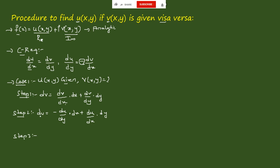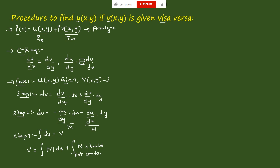Step 3: integrate dv to get the v value. So v = ∫M dx + ∫N dy, where M and N are the respective terms, and the N term should not contain x. When you perform this integration, you obtain the imaginary part v. This completes how to find the imaginary part when the real part is given.